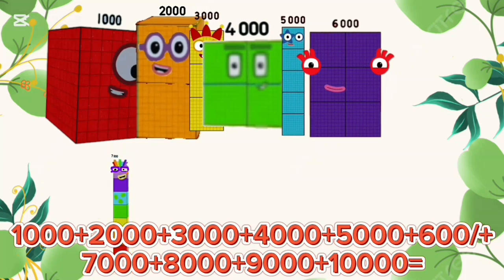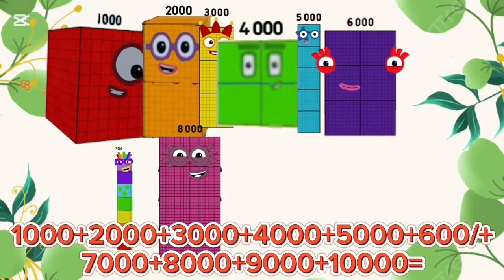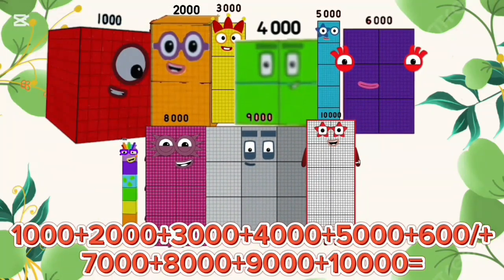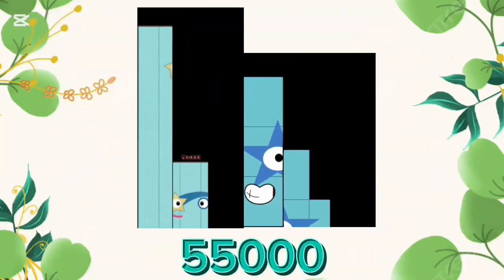7,000 plus 8,000 plus 9,000 plus 10,000 is equal to 55,000.